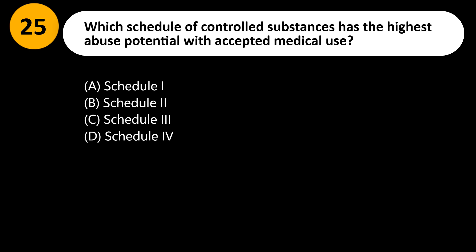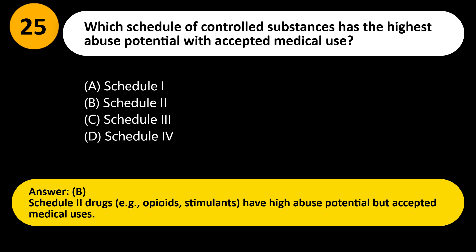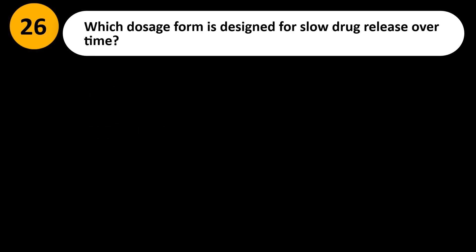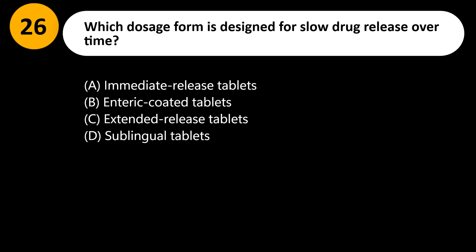Which schedule of controlled substances has the highest abuse potential with accepted medical use? A) Schedule 1, B) Schedule 2, C) Schedule 3, D) Schedule 4. Answer: B. Schedule 2 drugs (e.g., opioids, stimulants) have high abuse potential but accepted medical uses.